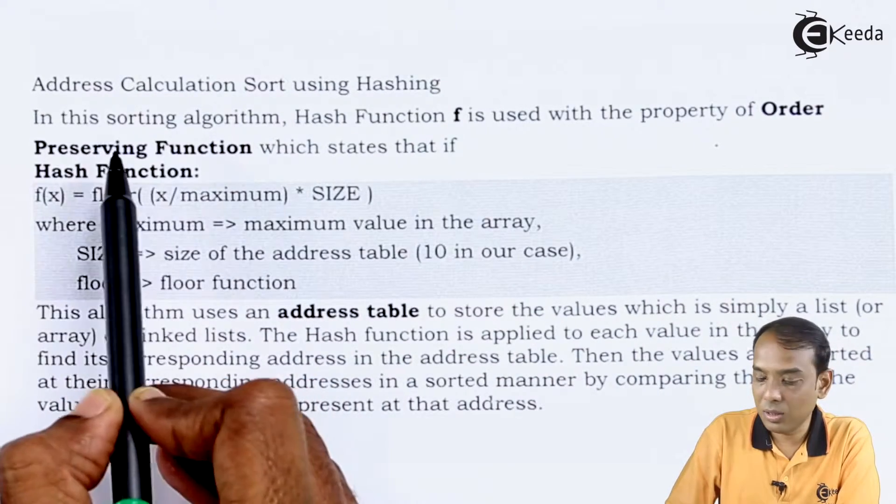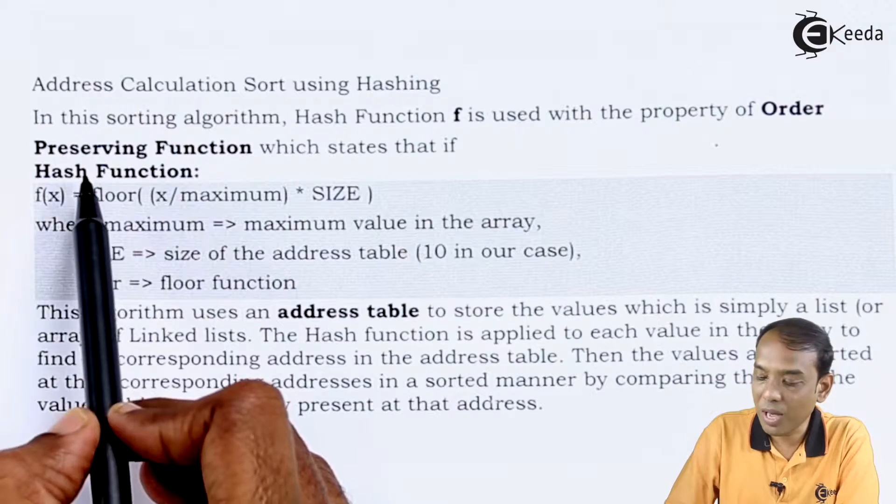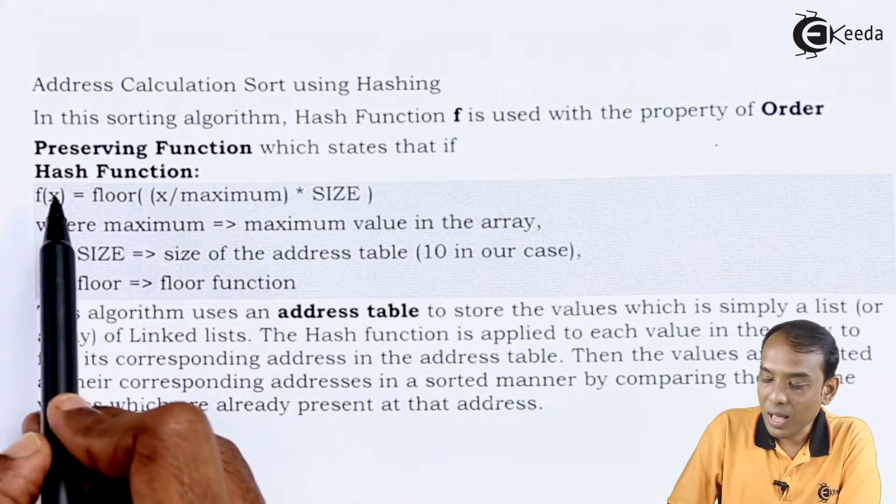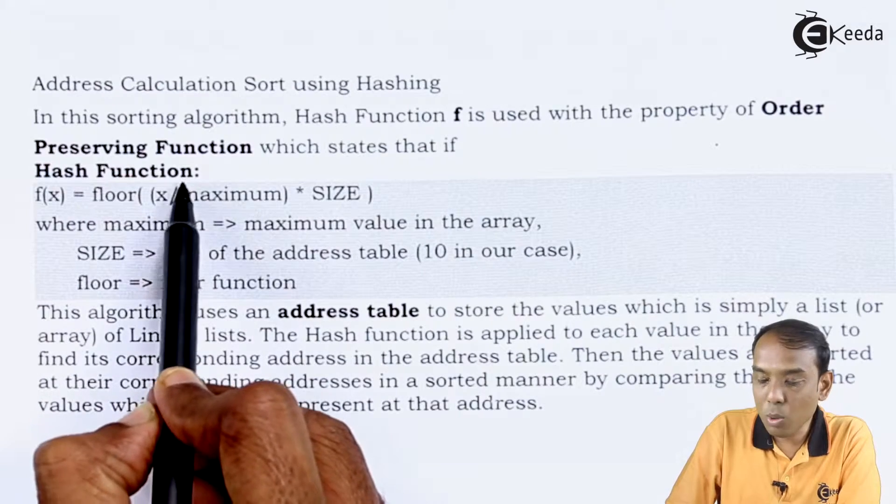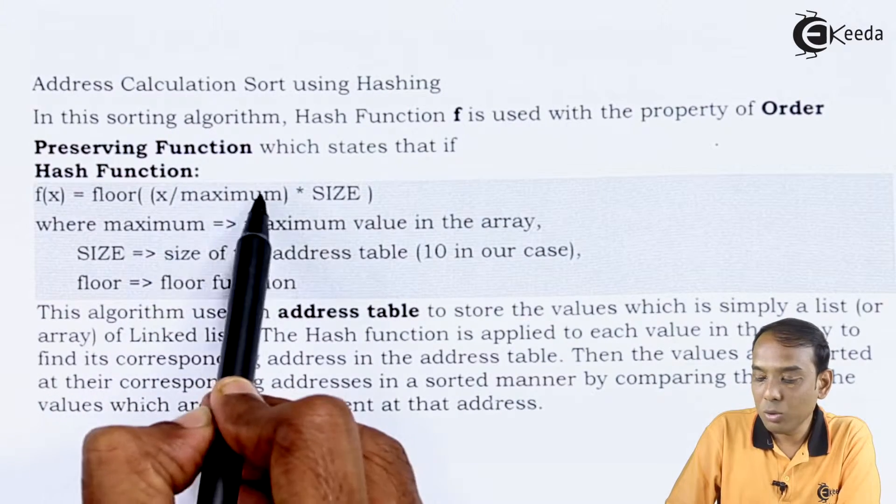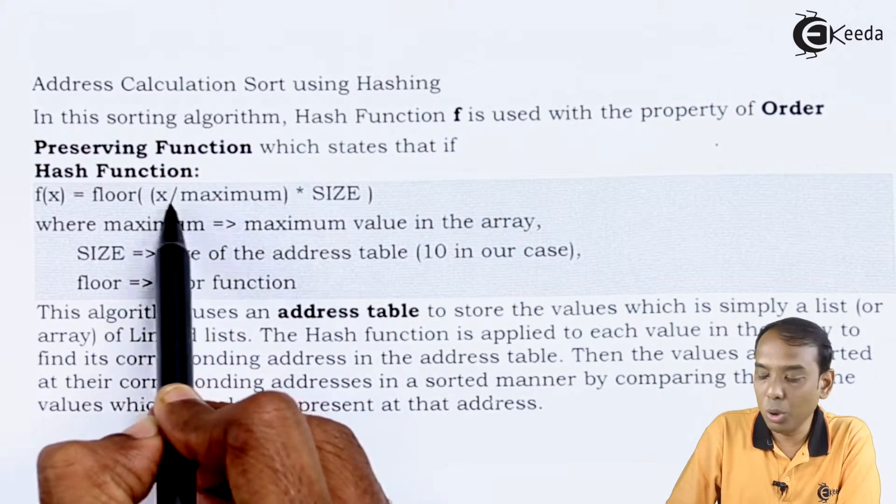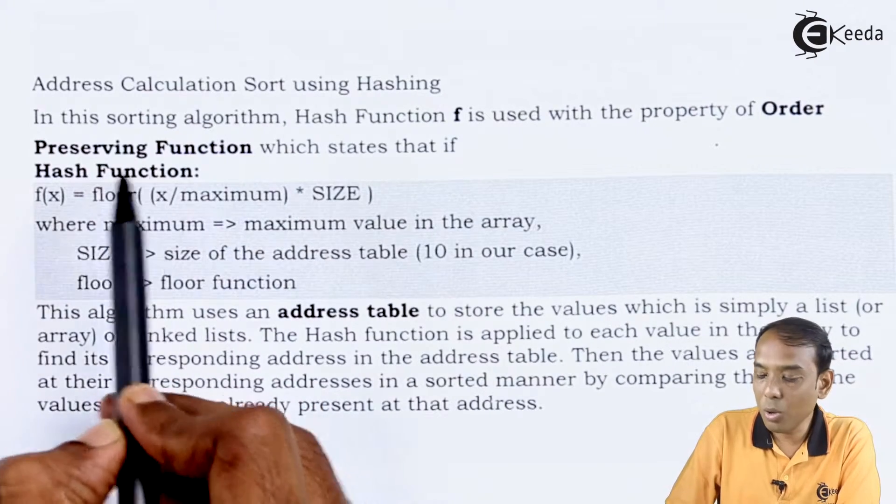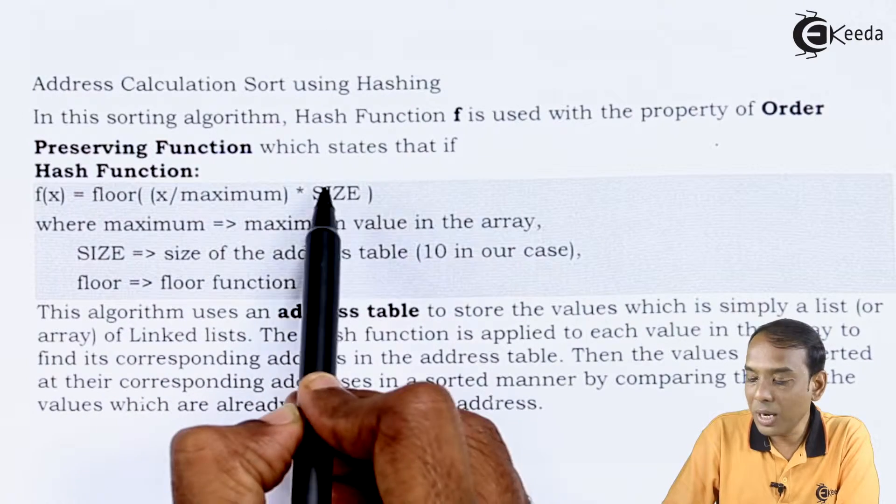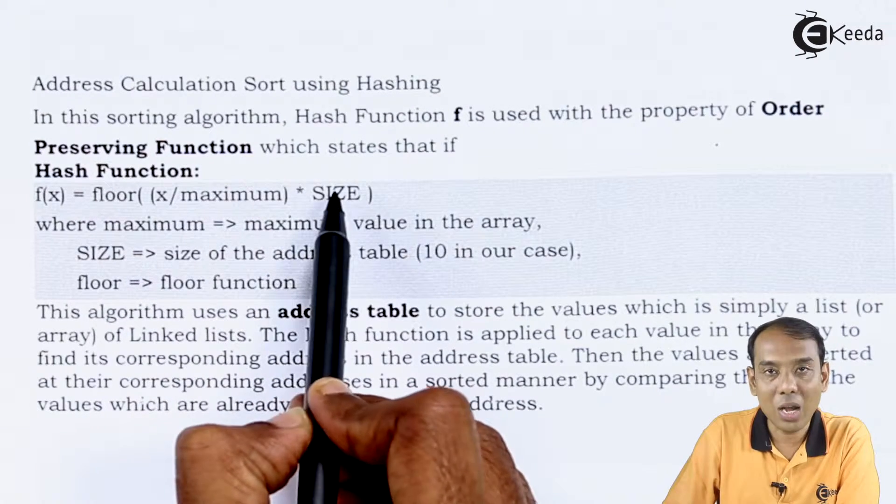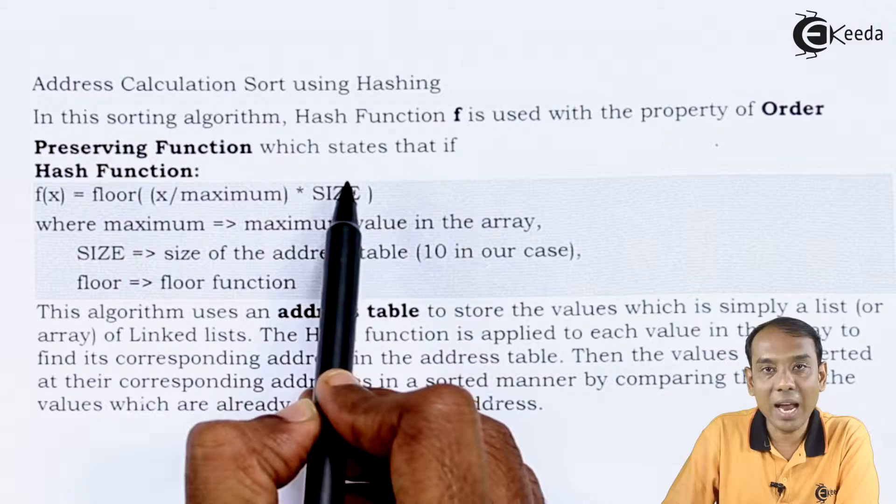Now the function value is like this. Let us go with the function value. We have the hash function named as f whose value will be floor of x divided by maximum. So in this case we are going to get the quotient. Remember we are going to have the floor function with the value of x divided by the maximum multiplied by the size of the value. This is how you calculate the address.